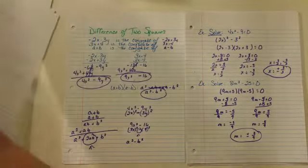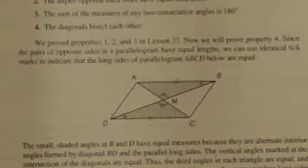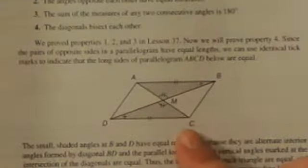Now we're going to talk about parallelograms again, going to page 177. A parallelogram is defined as a quadrilateral with two pairs of parallel sides. It also has four other properties. Number one: opposite sides have equal lengths — AB equals DC and AD equals BC. Number two: opposite angles have equal measures — angle B equals angle D, angle A equals angle C. Number three: consecutive angles sum to 180 degrees. Number four: the diagonals bisect each other.